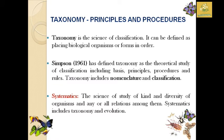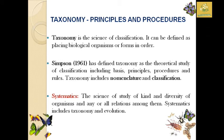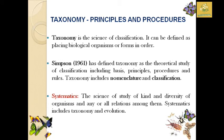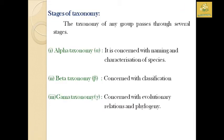Taxonomy includes nomenclature as well as classification. Systematics is the science of study of the kinds and diversity of organisms and the relations among them. Systematics includes taxonomic as well as the evolutionary aspects of classification. Any group passes through several stages of taxonomy.